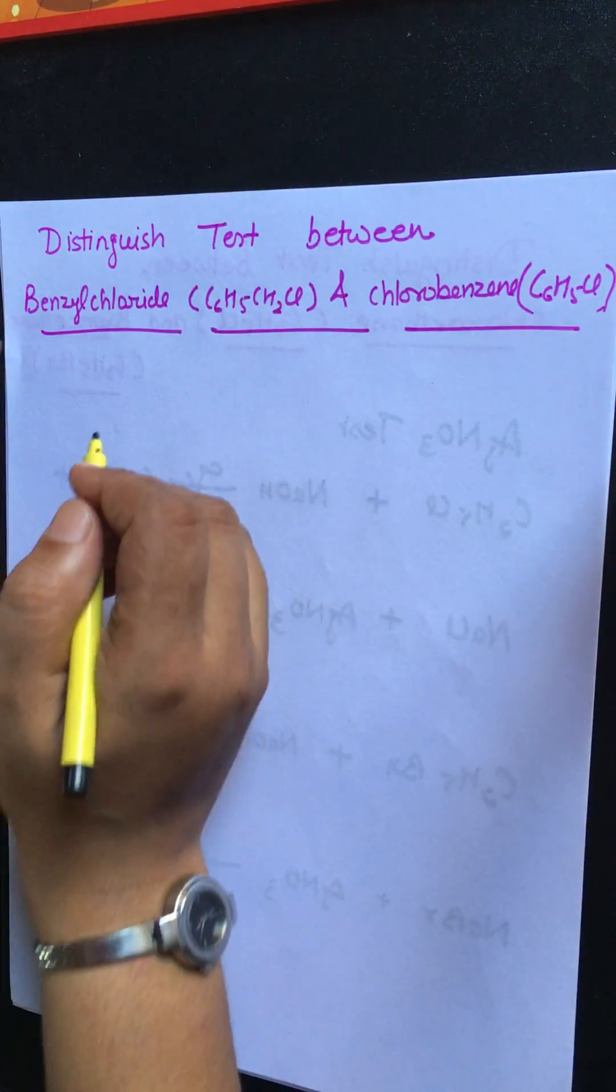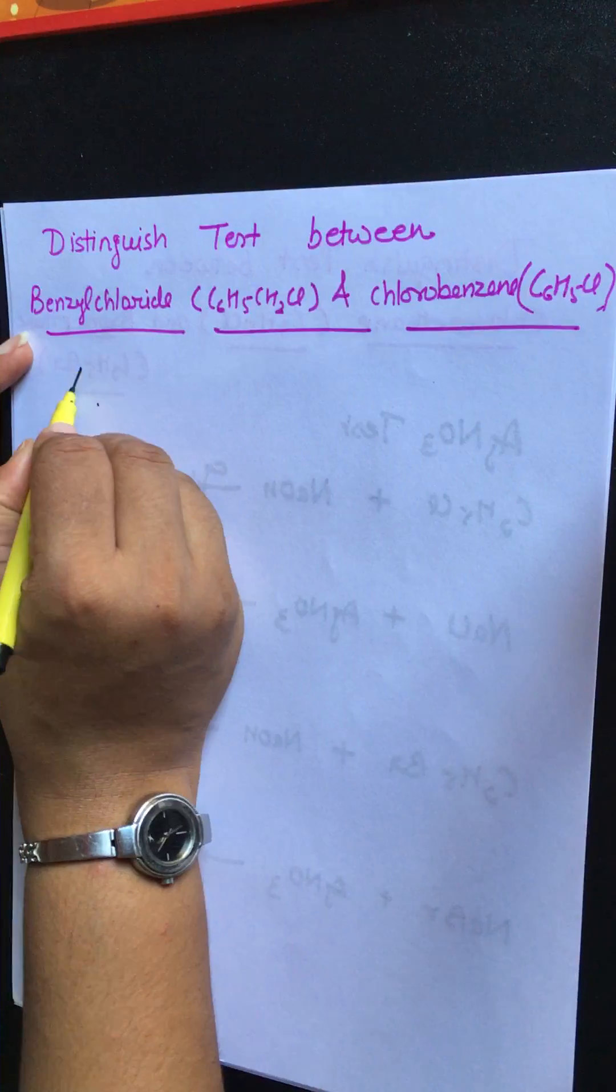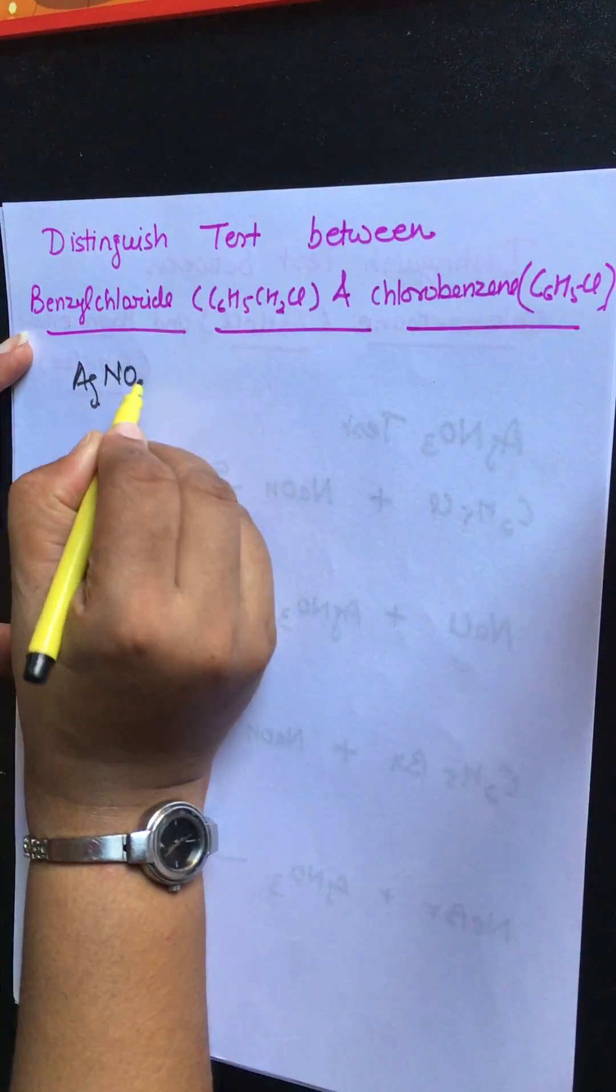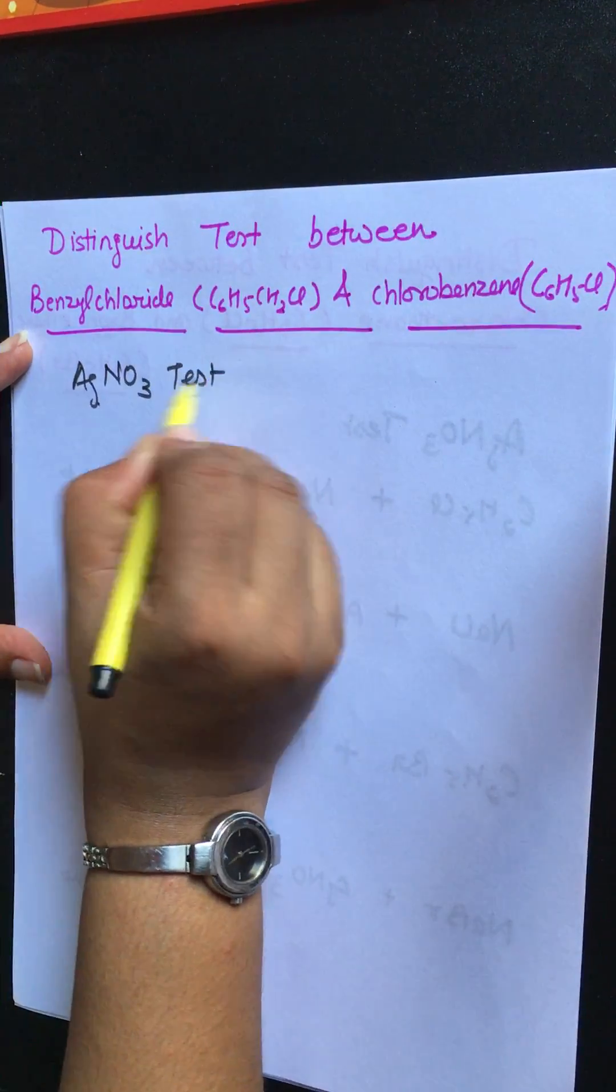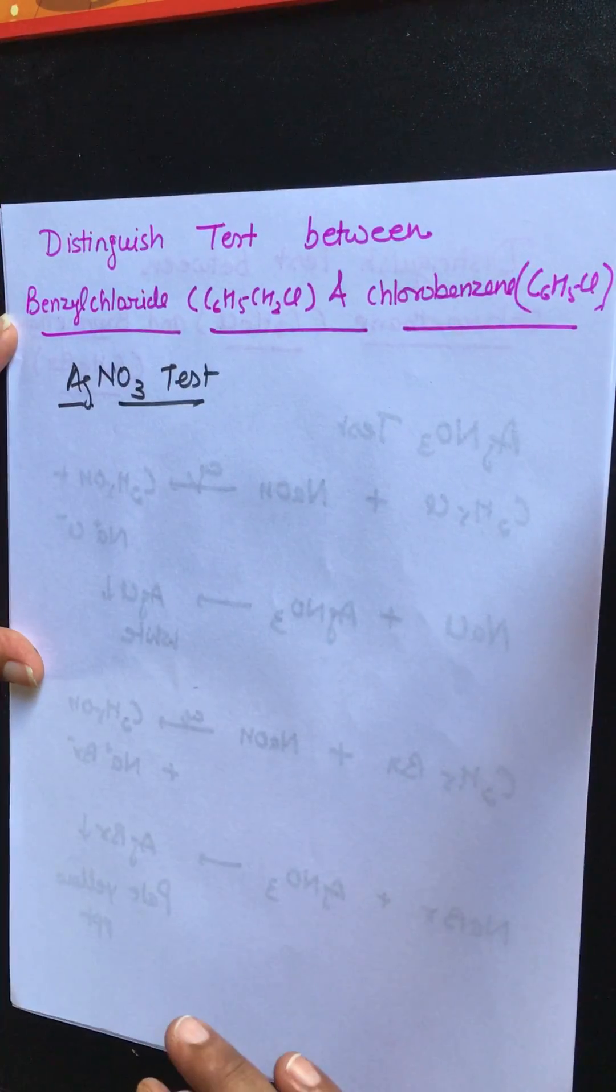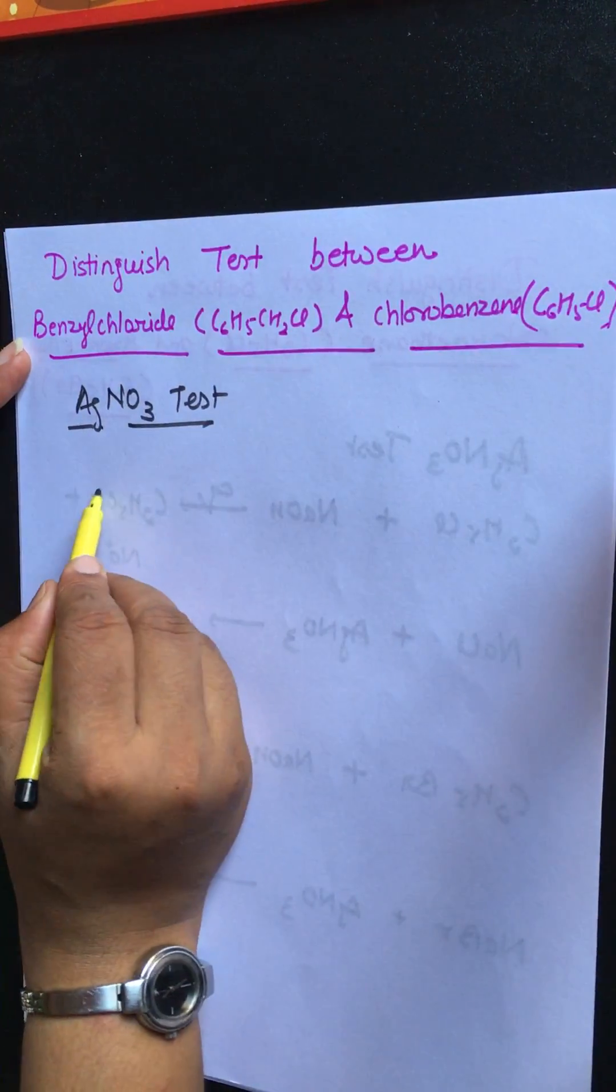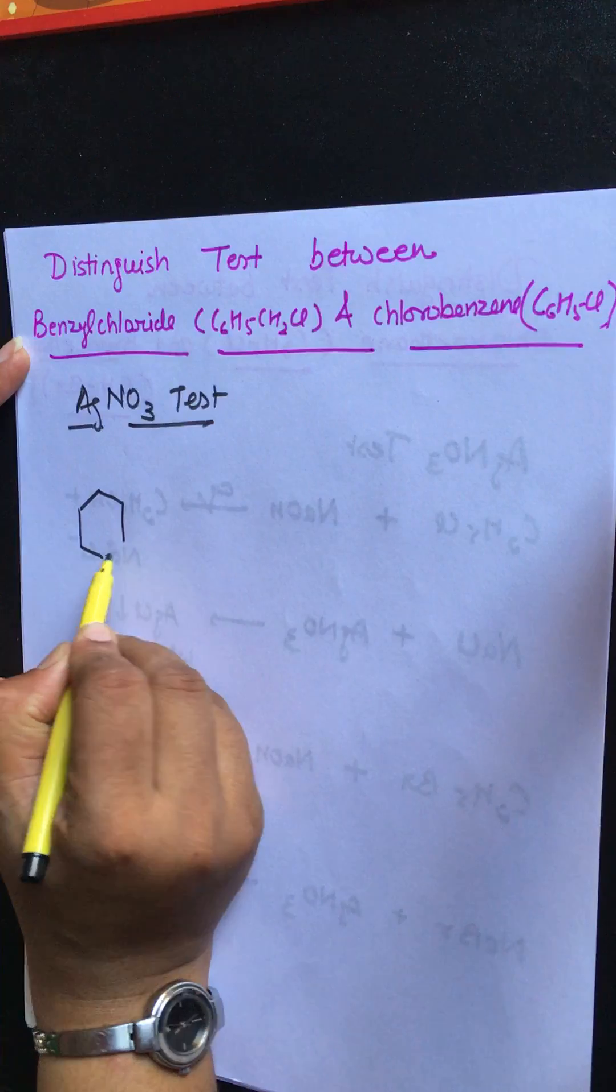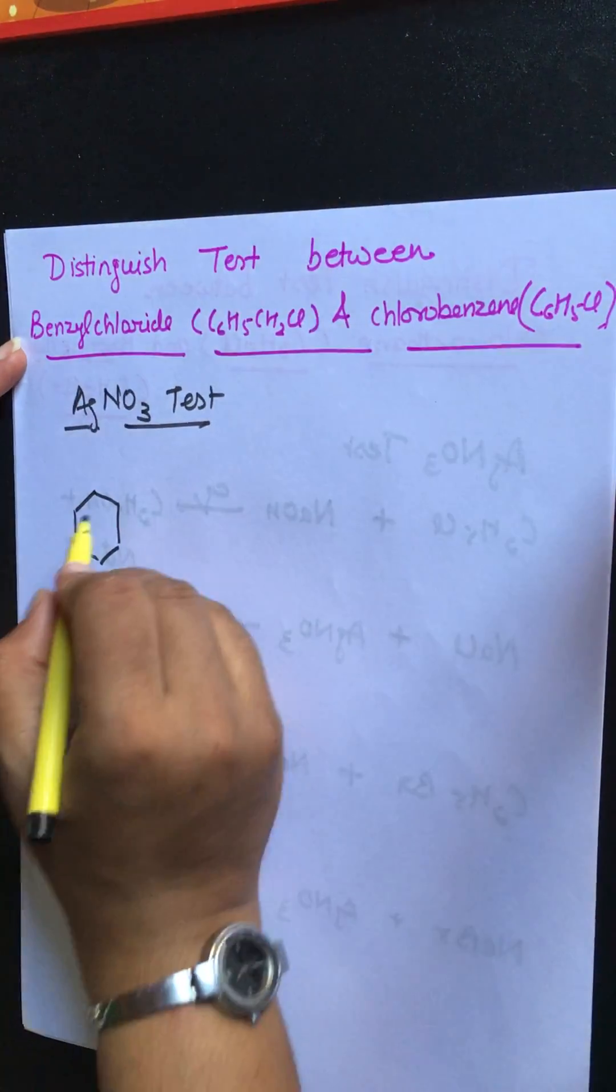So let's start AgNO3 test with benzyl chloride. This is the structure of benzyl chloride.